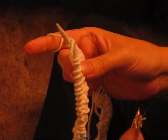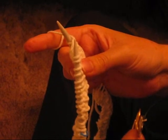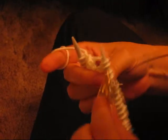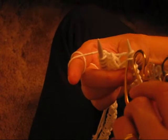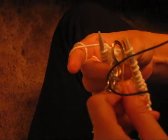Now I'm going to demonstrate doing a cable back four. You slip the two stitches onto the cable needle necklace.